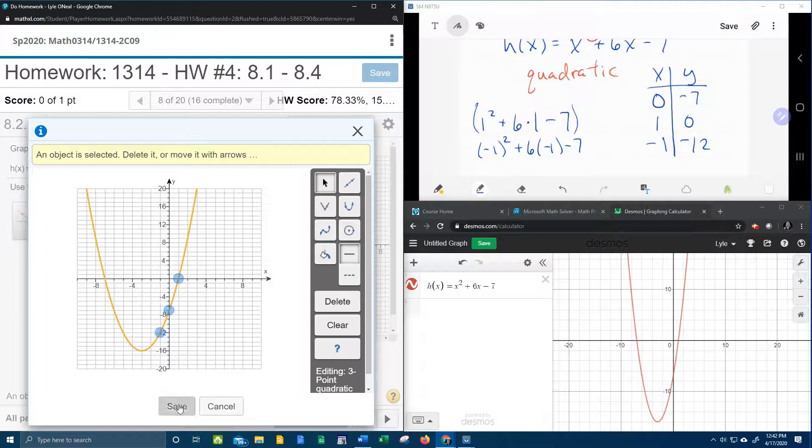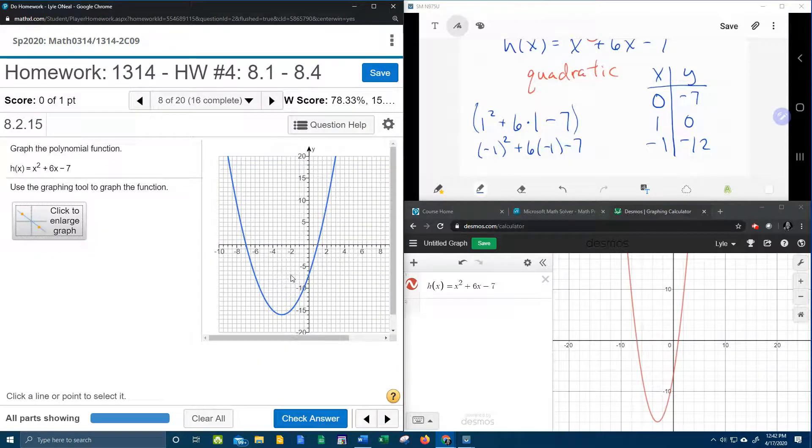So I'm going to click save, and then what I'm going to do is I'm going to have you notice that I have already graphed that in Desmos, and it looks the same, the only reason it doesn't look completely identical is because of the scale here.